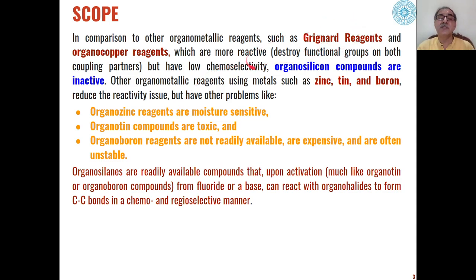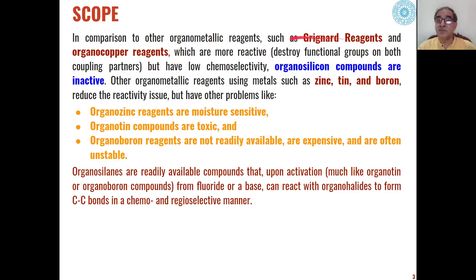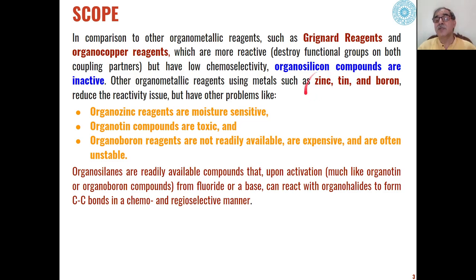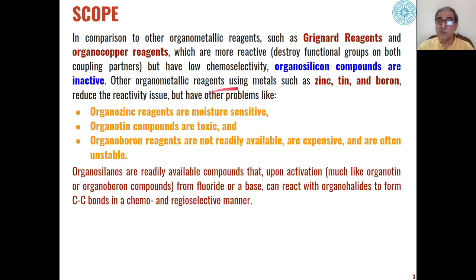For example, Grignard reagents or organocopper reagents are much more reactive in comparison to organosilane compounds. But the chemoselectivity of those reactions is lower compared to the chemoselectivity of the organosilane compounds. In addition, other organometallic reagents based on zinc, tin, or boron metals have some issues — for example, in the case of organomagnesium compounds, the moisture sensitivity of these reagents is a problem.